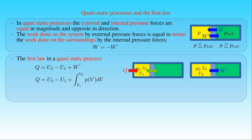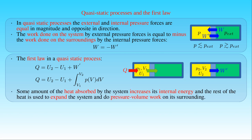Explicitly, the heat Q is given by U2 minus U1, plus the integral of the internal pressure P over the volume V of the system from its initial volume V1 to its final volume V2. We can state that some amount of the heat absorbed by the system increases its internal energy, and the rest of the heat is used to expand the system and do pressure-volume work on the surroundings.